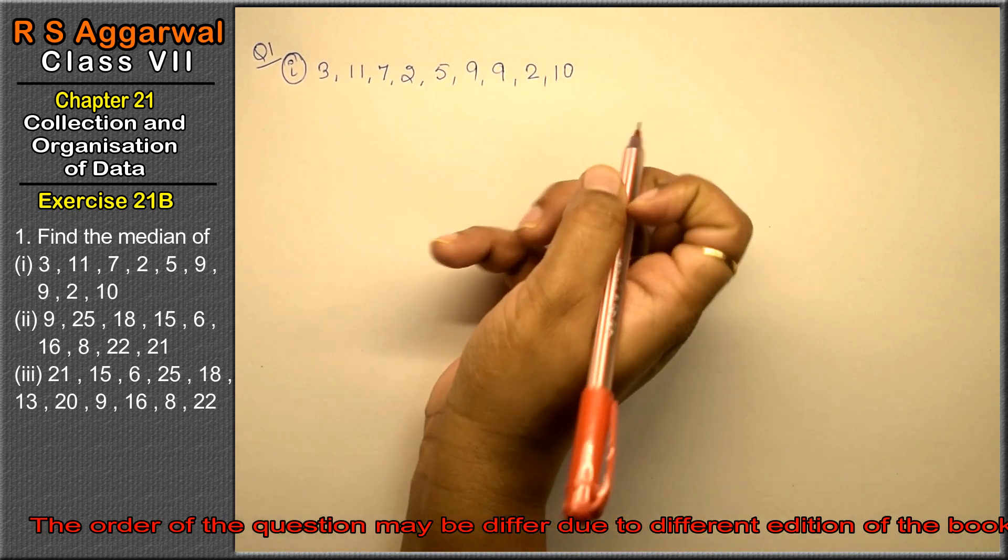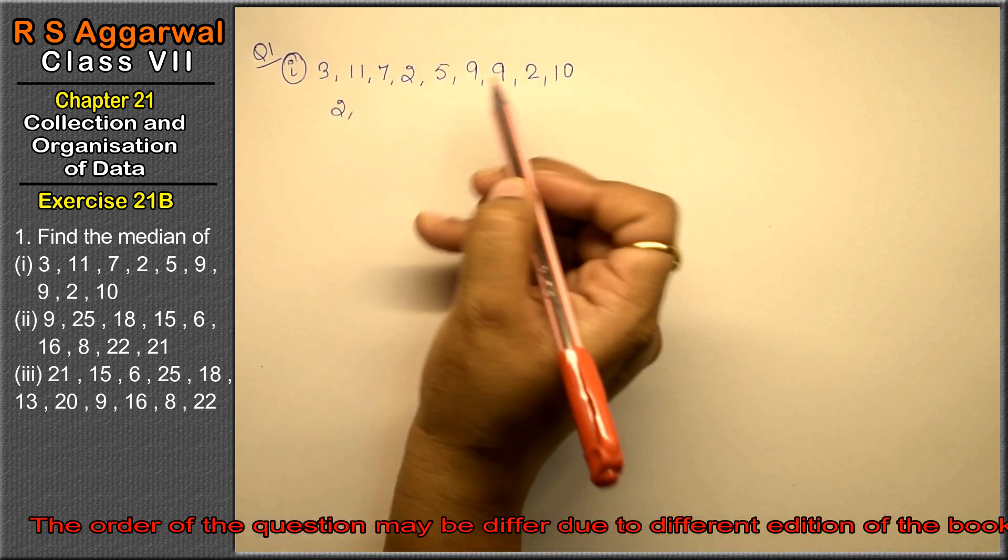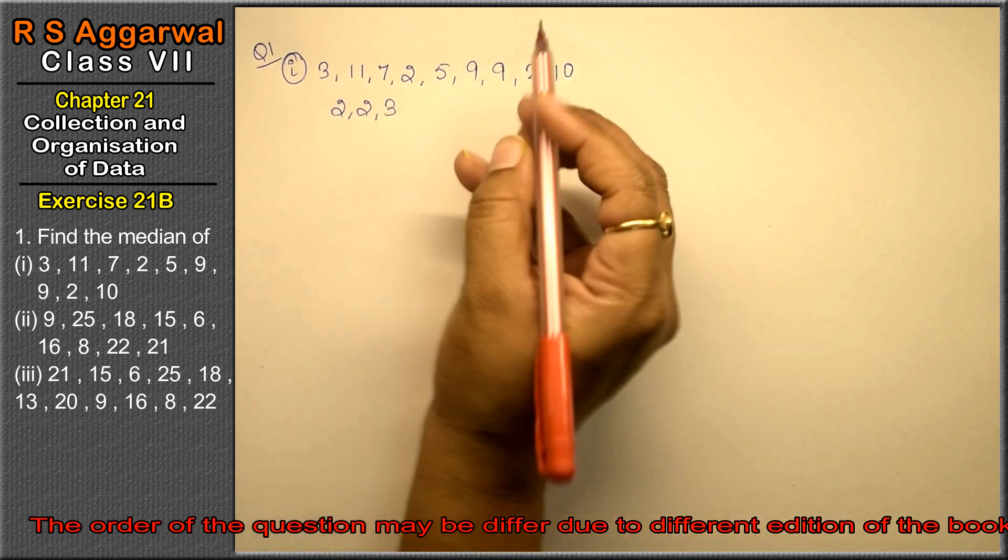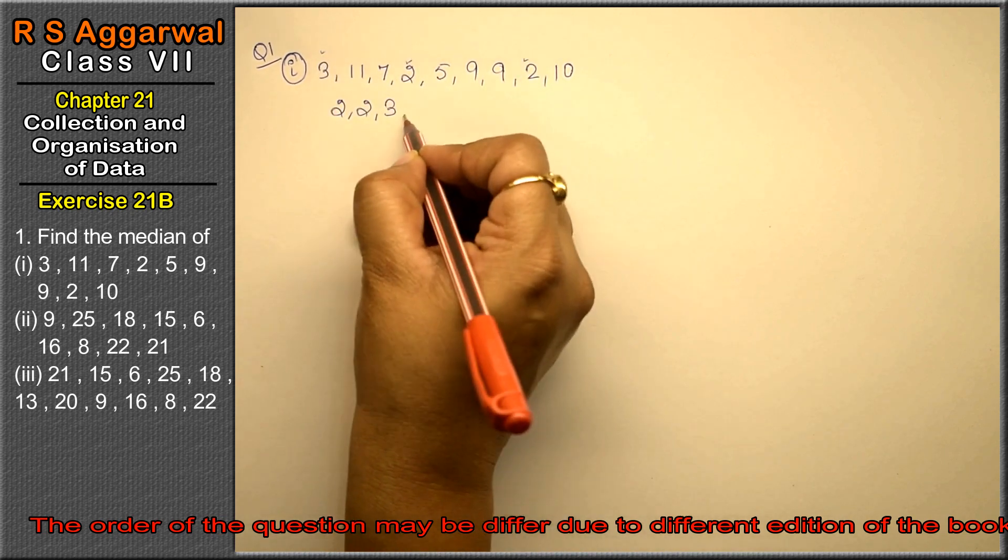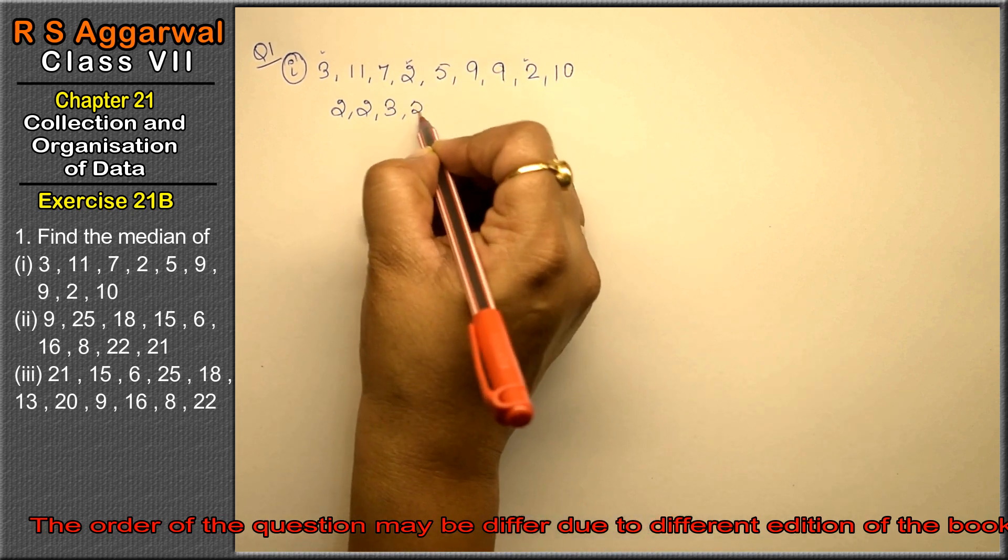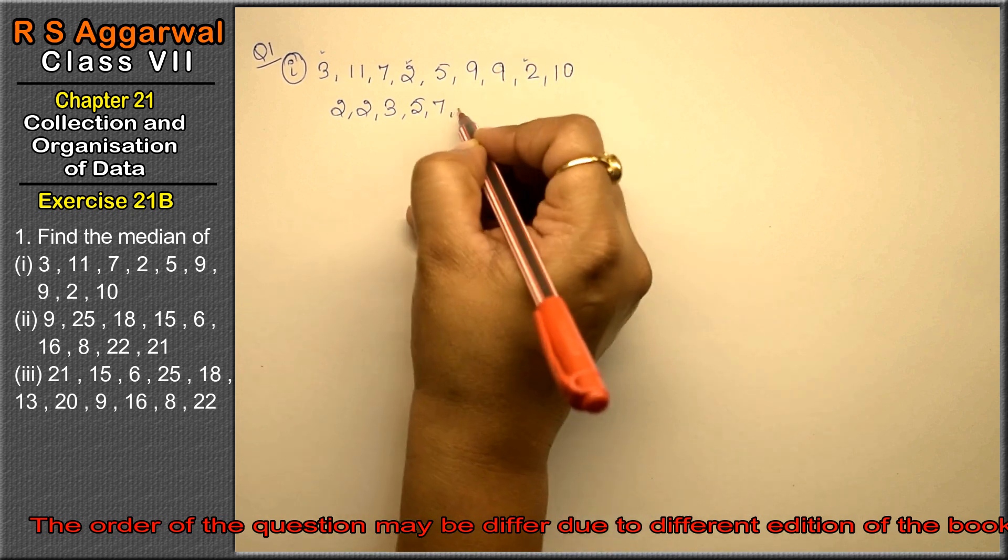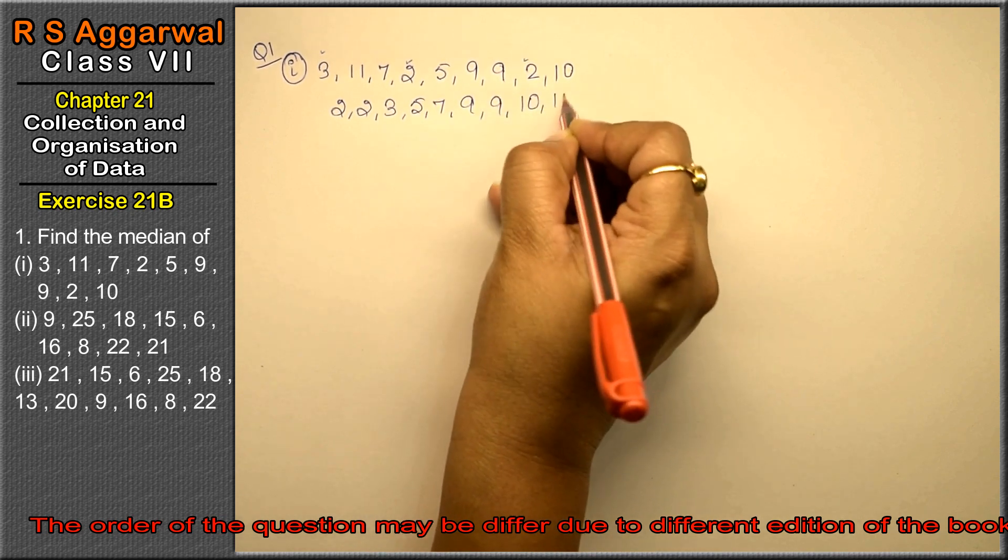Now for the median, let's do this in ascending order. The most small number is 2, 2 comes two times, then 3, then 5, then 7, then 2 times 9, then 10, and then 11.